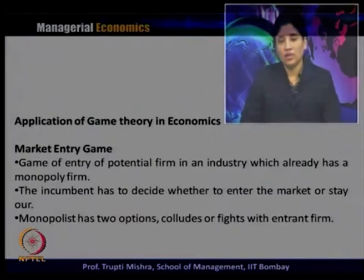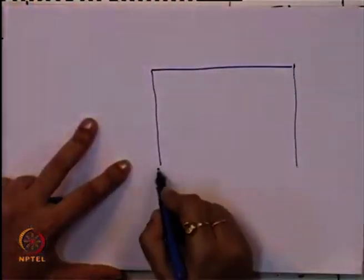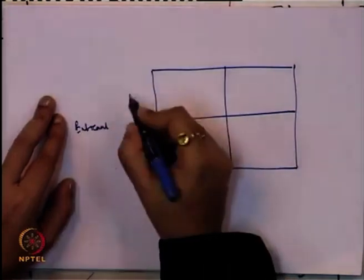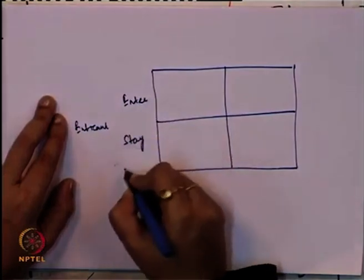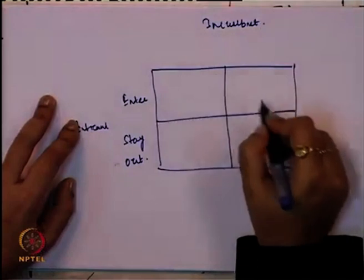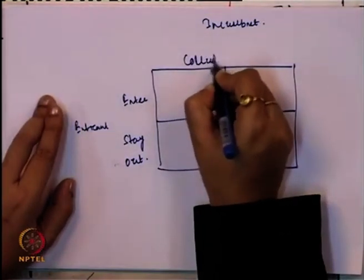So there are four options available taking together the incumbent and the existing firm. For the incumbent firm, the options are whether to enter the market or stay out; for the existing firm, whether to fight or collude with the new entrant. On that basis, we will try to construct a payoff matrix based on the options available to the existing firm and also to the incumbent firm. To draw this payoff matrix, we need the payoffs for all four options. Here we take the case of the entrant — two options are either to enter or to stay out — and for the incumbent, the options are collude or fight.